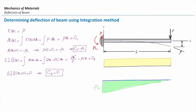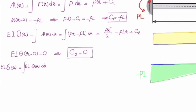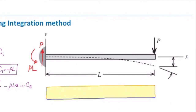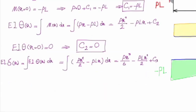I will integrate one more time to determine deformation. EI times delta X equals the integral of EI times theta X, which gives Px cubed over 6 minus PLx squared over 2 plus C3. At the very left end, deformation is zero, so EI times delta at X equal to zero is zero, giving C3 equal to zero.